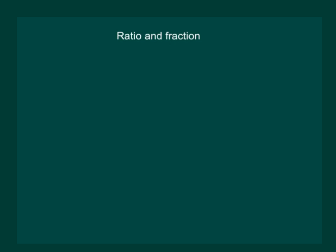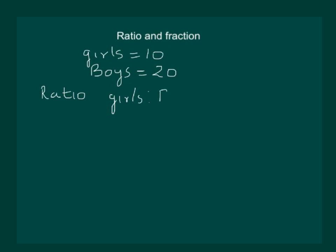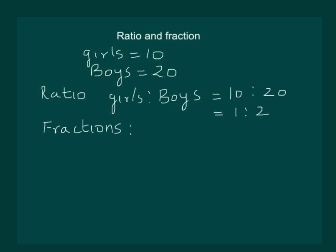Say in a class there are 10 girls and 20 boys. Then we can say that the ratio of girls to boys is equal to 10 is to 20, or 1 is to 2. That means that corresponding to each girl, there are two boys in that particular class.